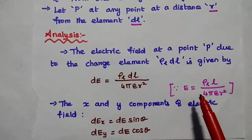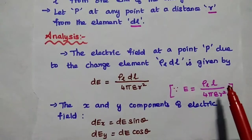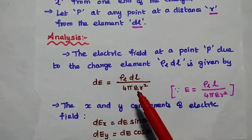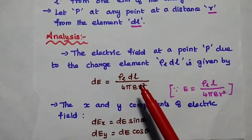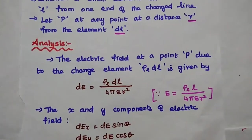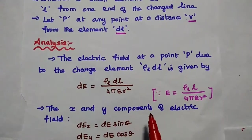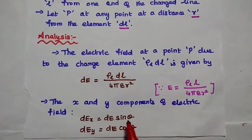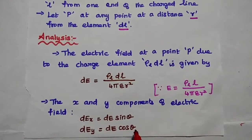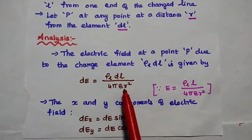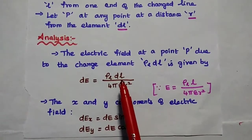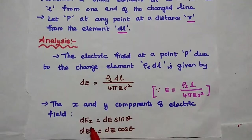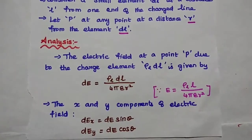We have already discussed that electric field intensity due to a line charge ρL·L divided by 4πεr². Here we are using a small element dl. Next we are going to analyze the x and y components of this electric field. From the diagram, dEx equals dE·sinθ and dEy equals dE·cosθ, where dE = ρL·dl / 4πεr². We substitute those values to find dEx and dEy for the entire length of the line.